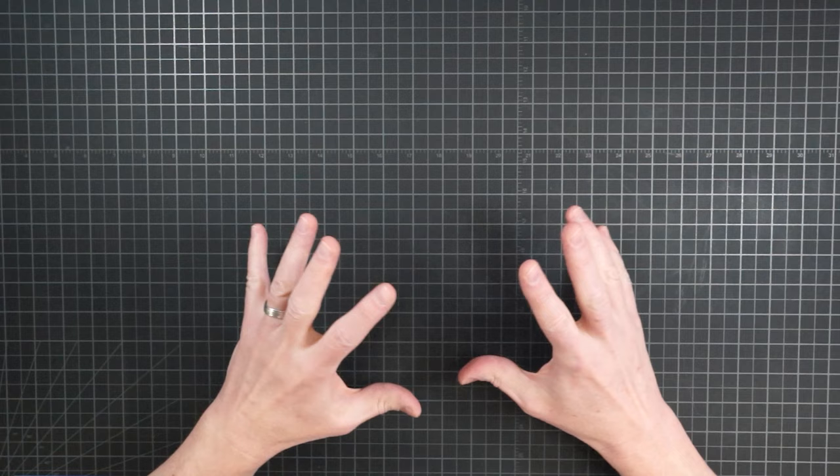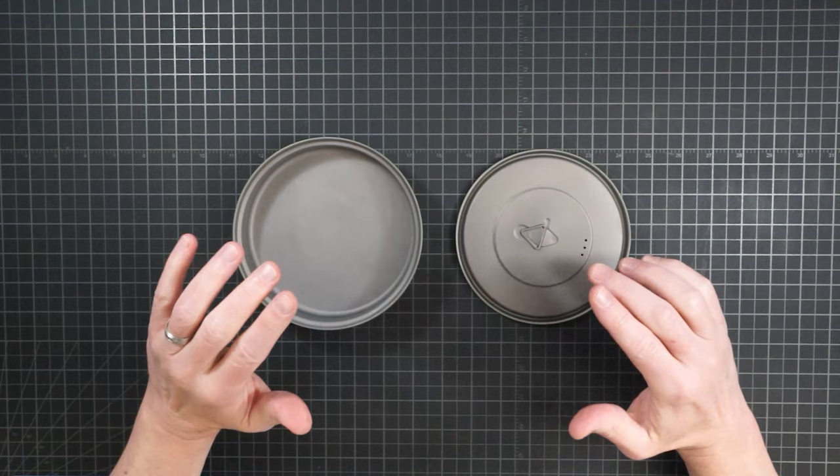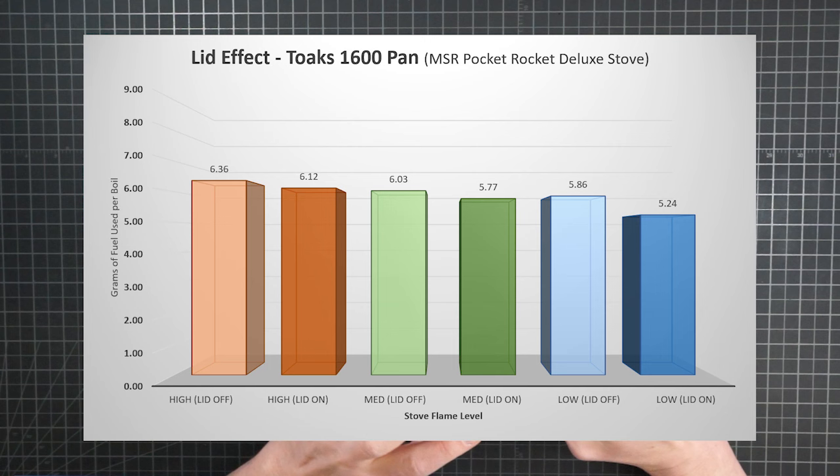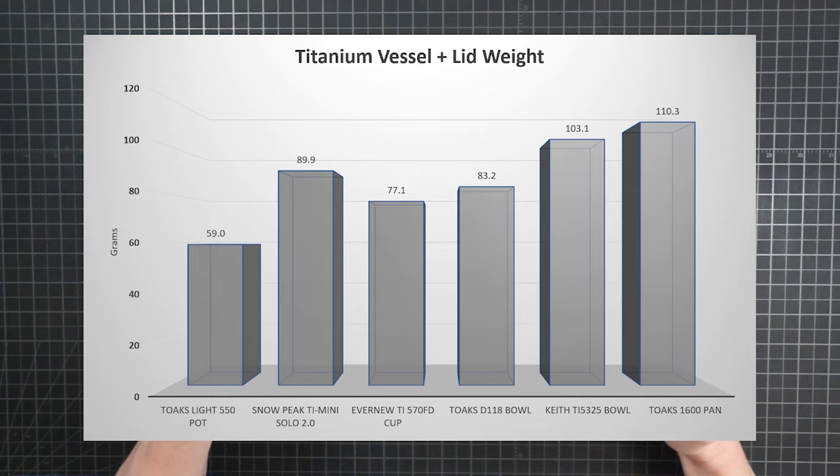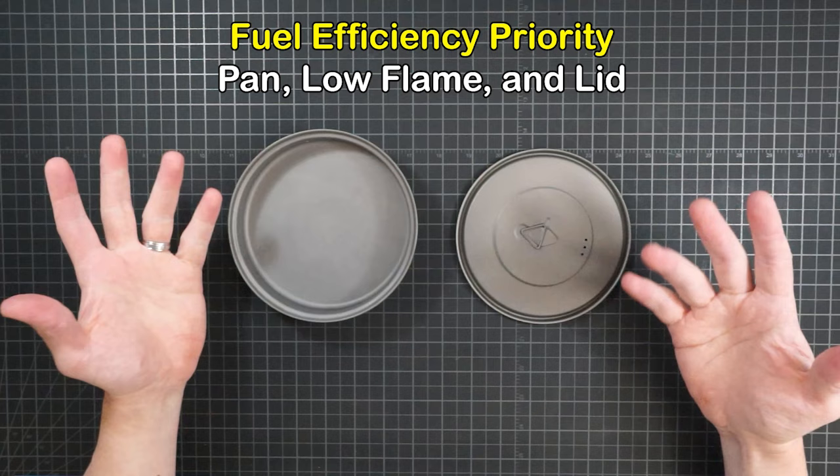Of all the variations I tested, the single most efficient combination was the widest pan on low flame with the lid on. And that will let you cook your water for just five and a quarter grams of fuel. It's the most fuel efficient choice, even though it's the heaviest container in the group. For a fuel efficiency priority, that's your simple answer: pan, low flame, lid.